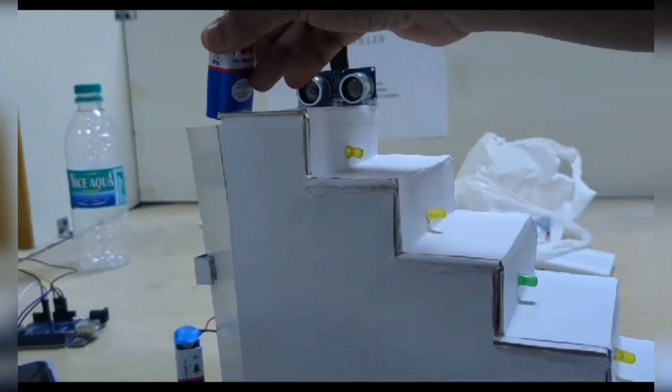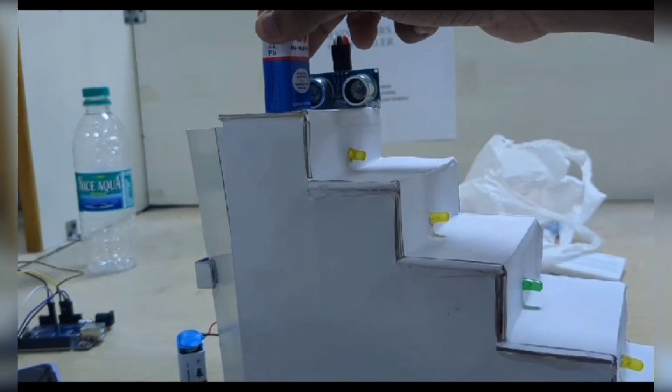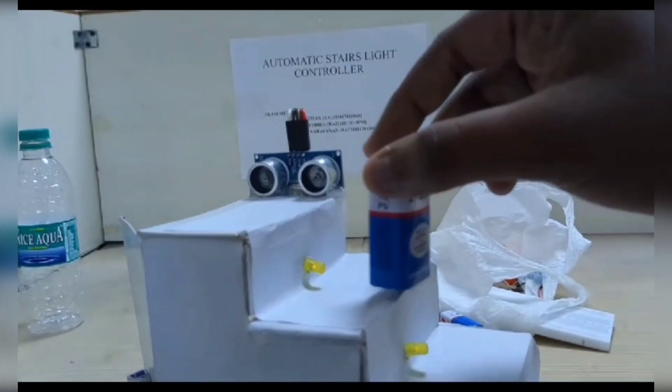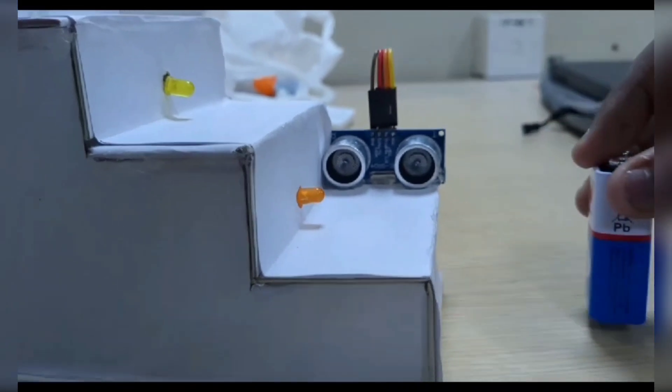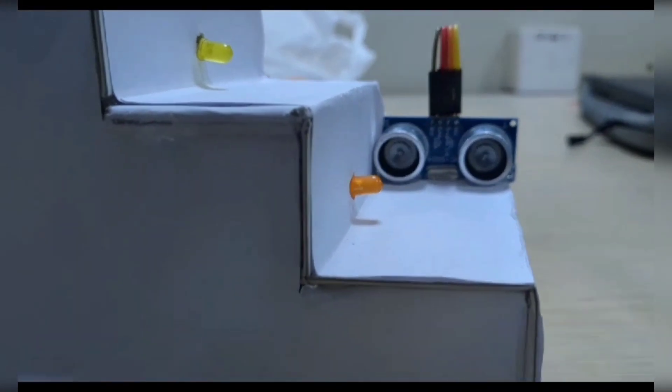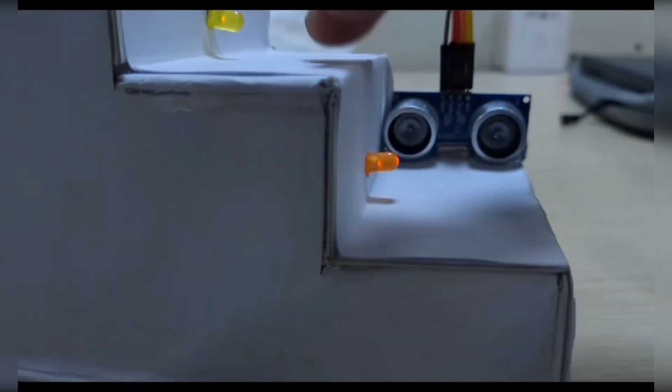The controller controls the relay module which acts like a switch. When the relay module activates, the light will be automatically on. When the person steps off the stairs, the light will be automatically off due to the relay module.